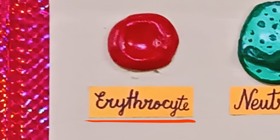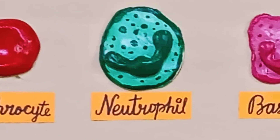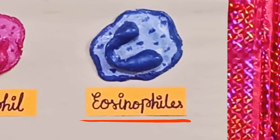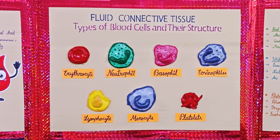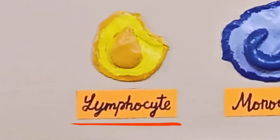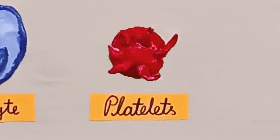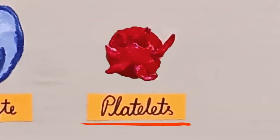The types of blood cells are: Erythrocyte, Neutrophil, Basophil, Eosinophil, Lymphocyte, Monocyte, and Platelets.